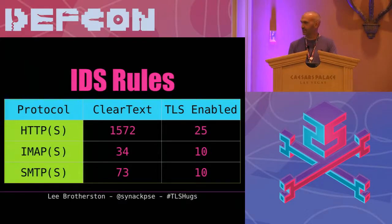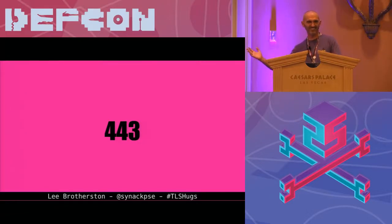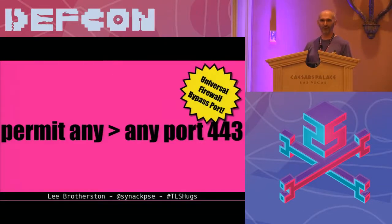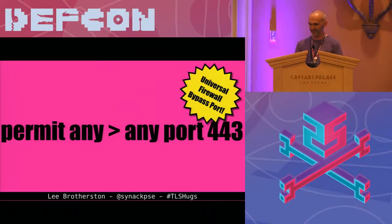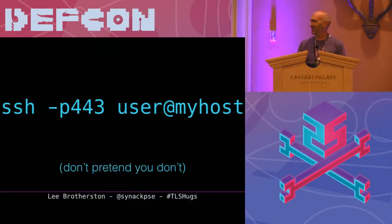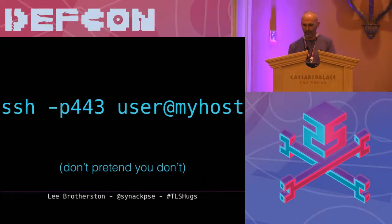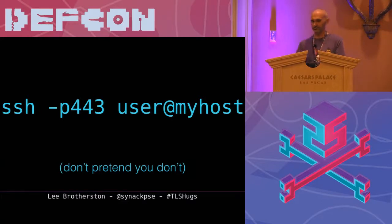That leads to this — does anyone know what this is? I'll give you a further hint: it is the universal firewall bypass port. Because if we don't understand crypto, we just let it through. You can get out of a lot of corporate environments just by SSHing on port 443, because what are you going to do with port 443? You can also often connect even when they have a proxy, just use a CONNECT command on port 443 and it will let you straight through.